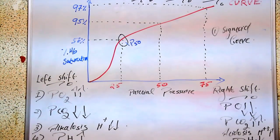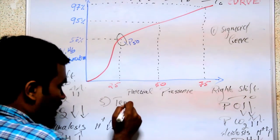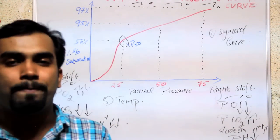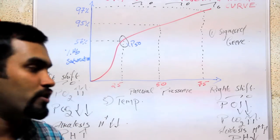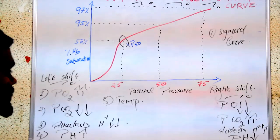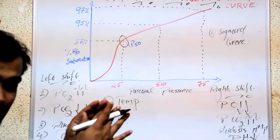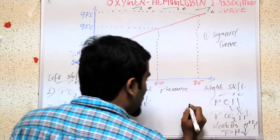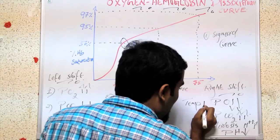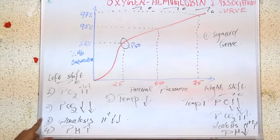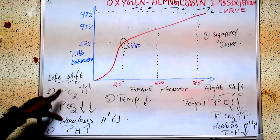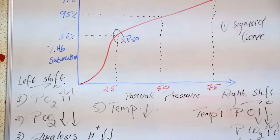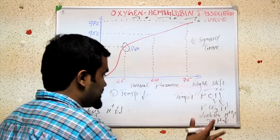The next factor is temperature. Think of it this way: if you heat something, bonds will break — they dissociate. So if temperature rises, oxygen and hemoglobin will dissociate, meaning right shift. For left shift, temperature must be decreased. Temperature decrease means association; temperature increase means dissociation — that is right shift.